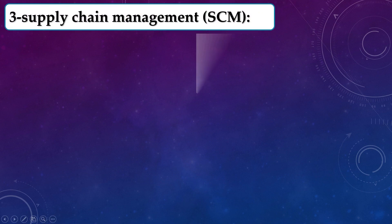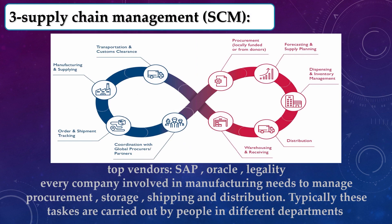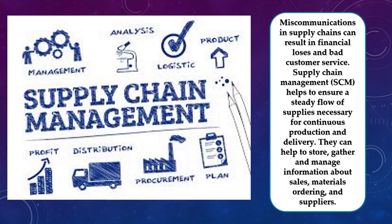After discussing ERP and CRM, we now talk about supply chain management. Vendors include SAP, Oracle, and Logility. Every company involved in manufacturing needs to manage procurement, storage, shipping, and distribution — tasks typically carried out by people in different departments. Miscommunication in the supply chain can result in financial losses and poor customer service, so SCM helps ensure a steady flow of supply necessary for continuous production and delivery.